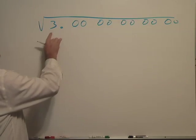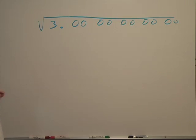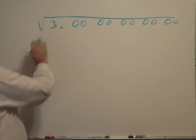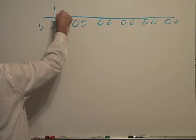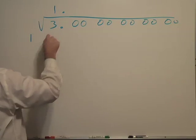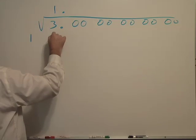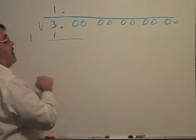Now the first thing we do is look for the largest perfect squared number that's less than 3, and that would be 1. 1 times 1 is of course 1, and I'll put the 1 here for show, and then we subtract and get 2.